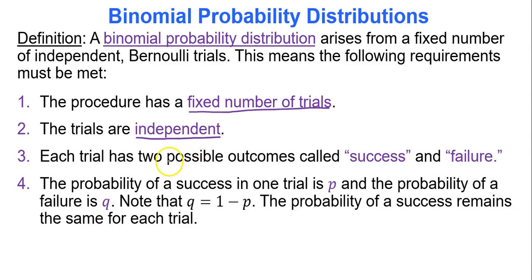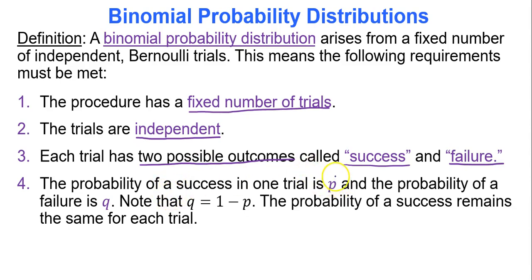Third, each trial only has two outcomes: one called a success and the other called a failure — it either happens or it doesn't. The probability of a success is represented by P, and the probability of a failure is represented by Q.